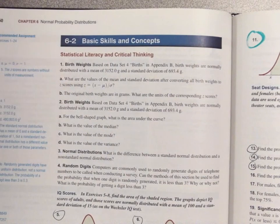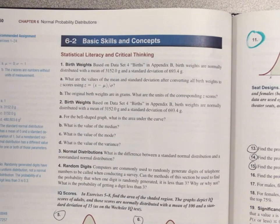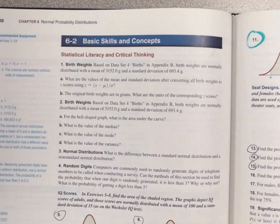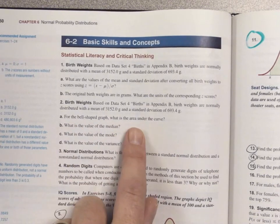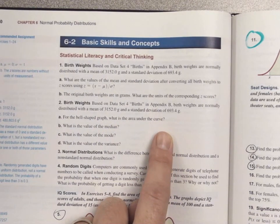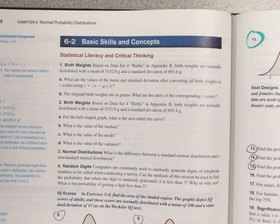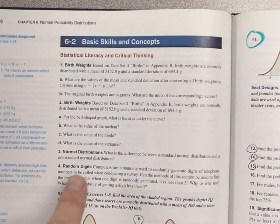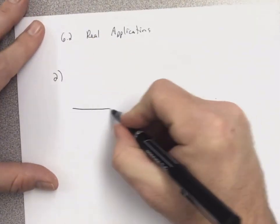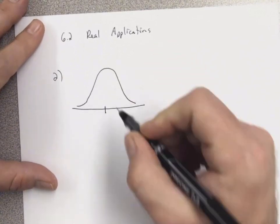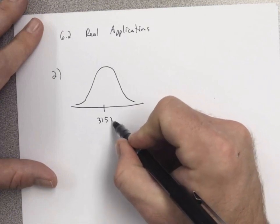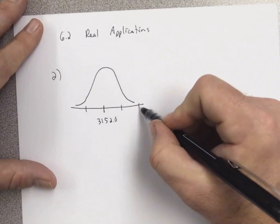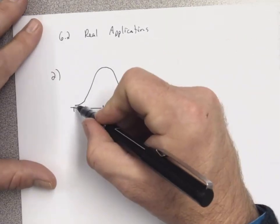Number two is asking about birth weights. Based on data set 4 in appendix B, birth weights are normally distributed with a mean of 3152.0 grams and a standard deviation of 693.4 grams. So we're going to draw a bell-shaped curve for baby weights with mean 3152.0 and standard deviation 693.4 grams.